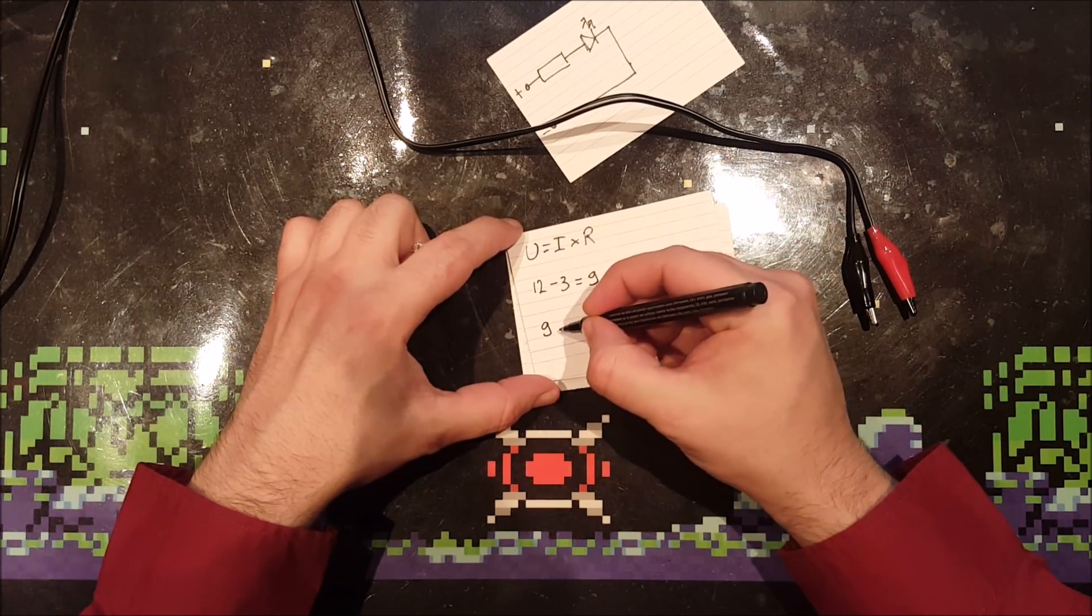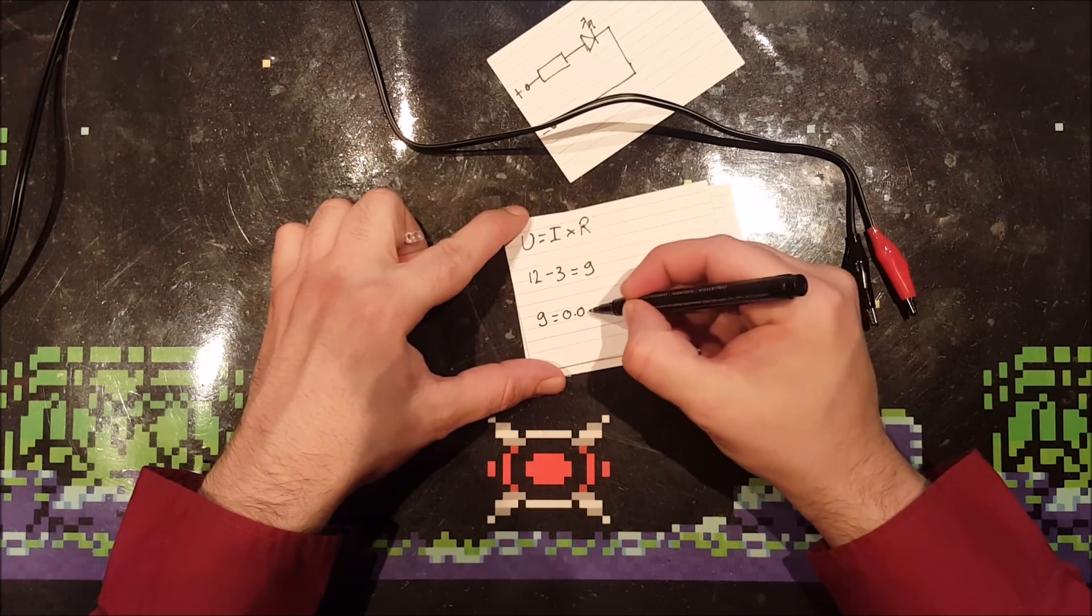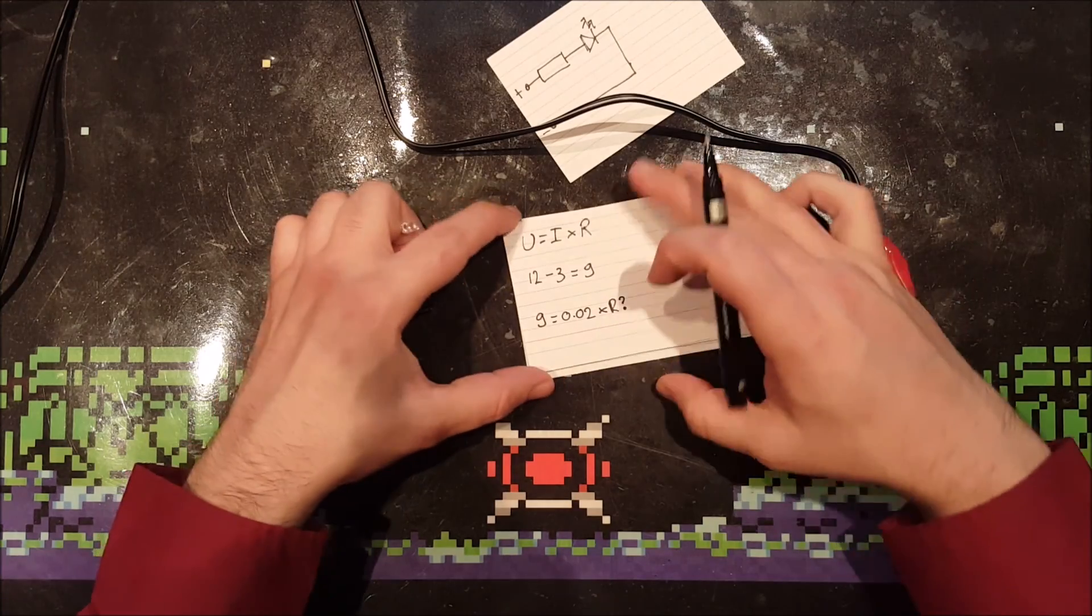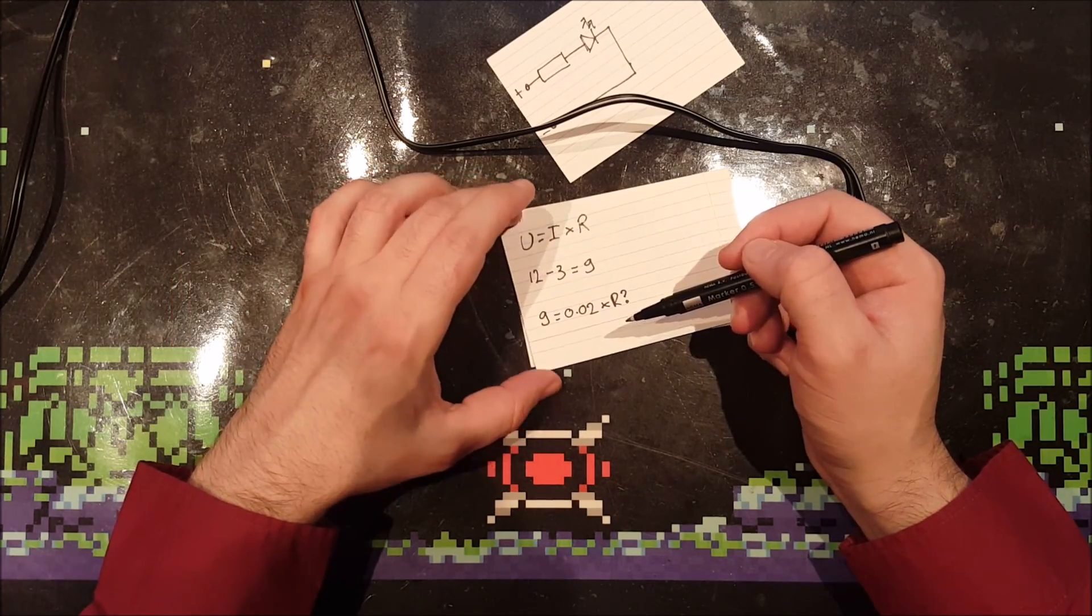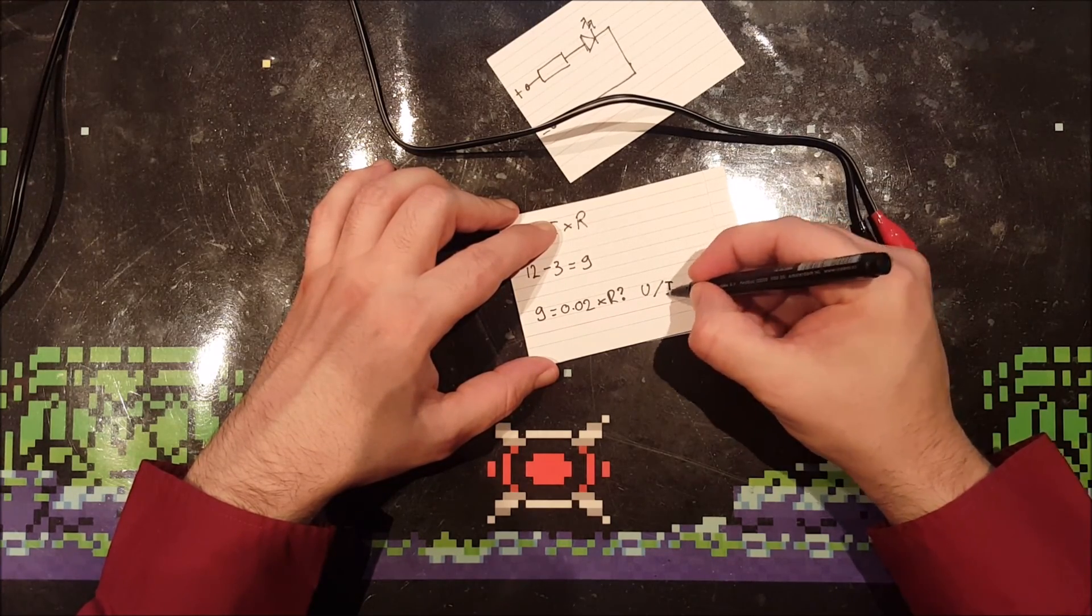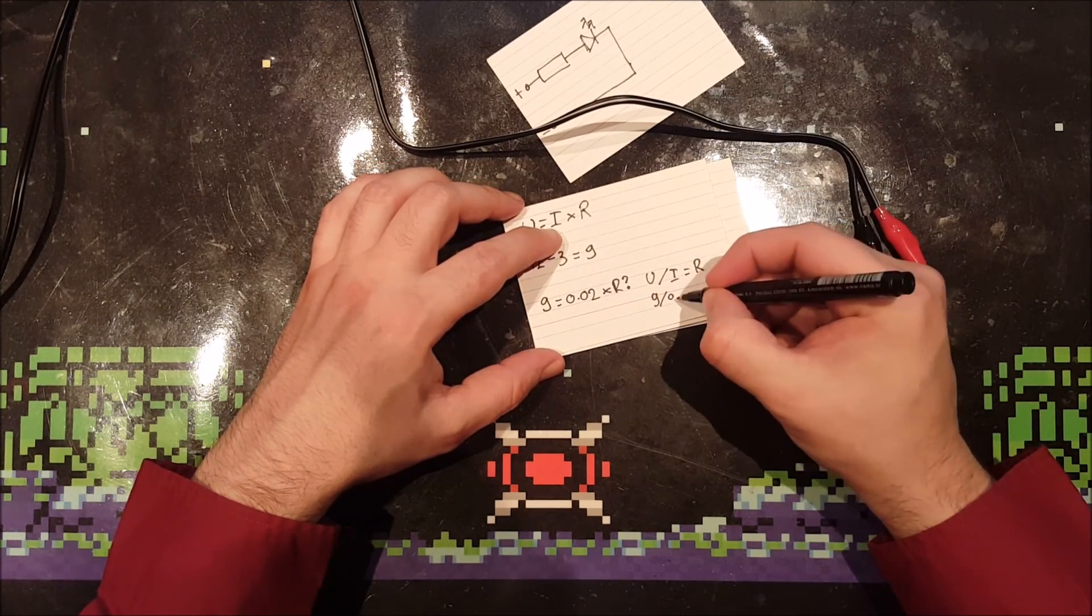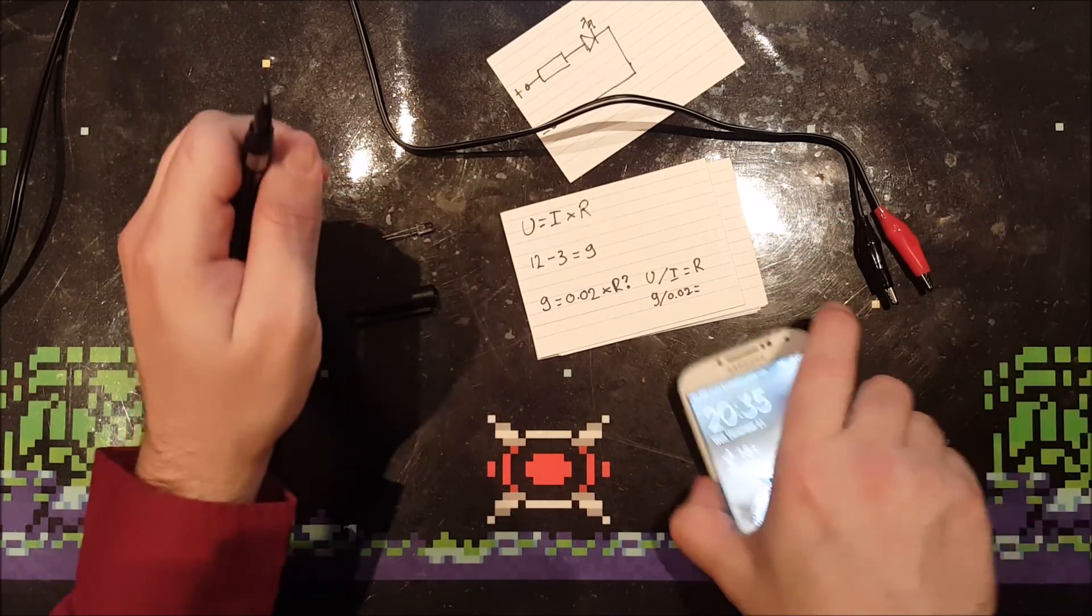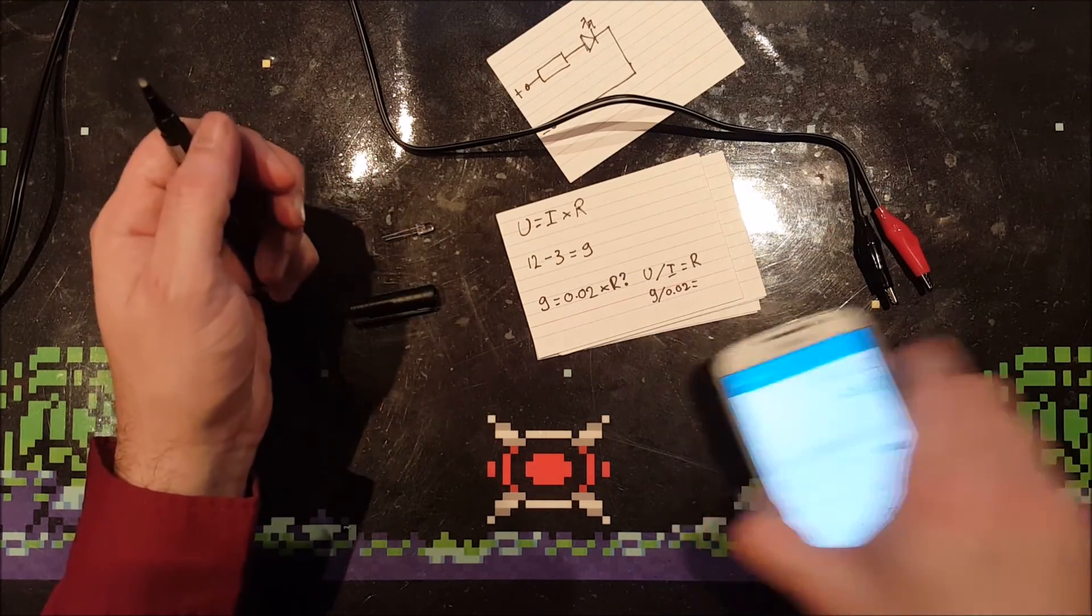So now we can fill in the formula. 9 volts, and the LED draws 20 milliamps, so 0.02 which is in full amps times R. We need to find R, so we need to reverse the formula. U divided by I is R. So 9 divided by 0.02, let's get a calculator. 9 divided by 20 milliamps is 450 ohms.